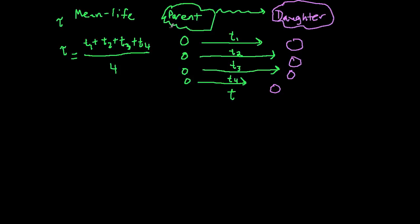Another way I could write this — and this is going to be necessary to set up the integral — is to recall that the amount of parent we have is n, and I'm going to call each of these tiny individual atoms, each tiny piece of the parent, dn. Each of these is dn, which is a tiny piece of the total n.